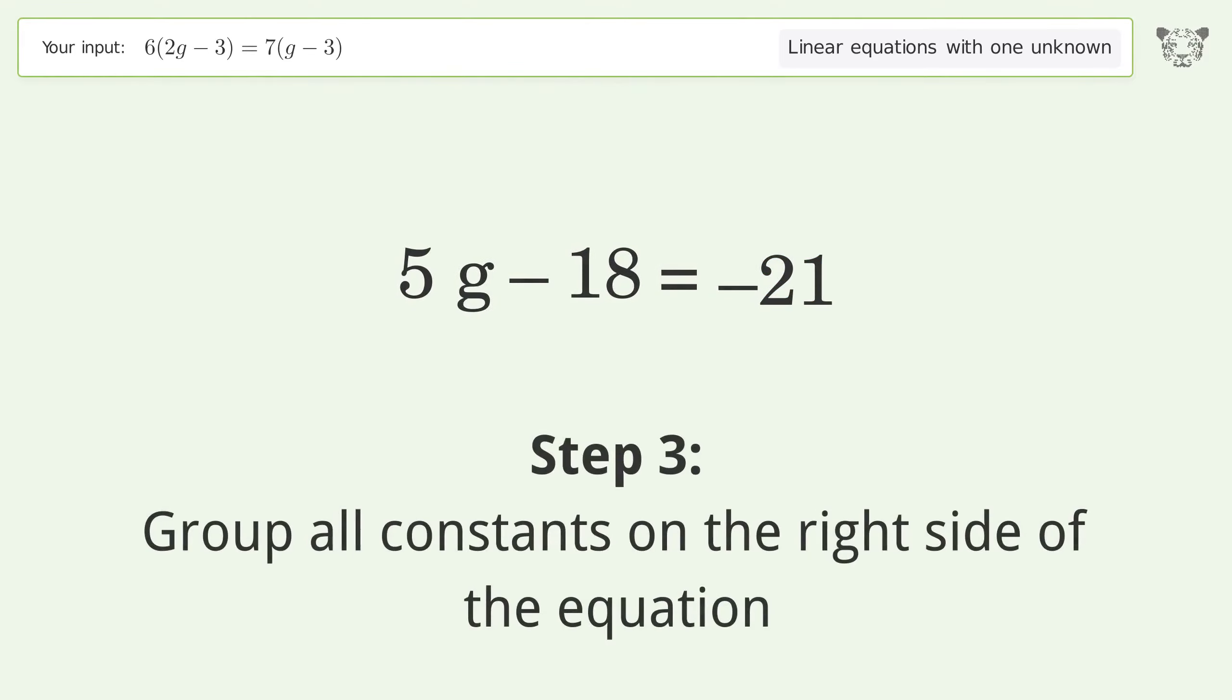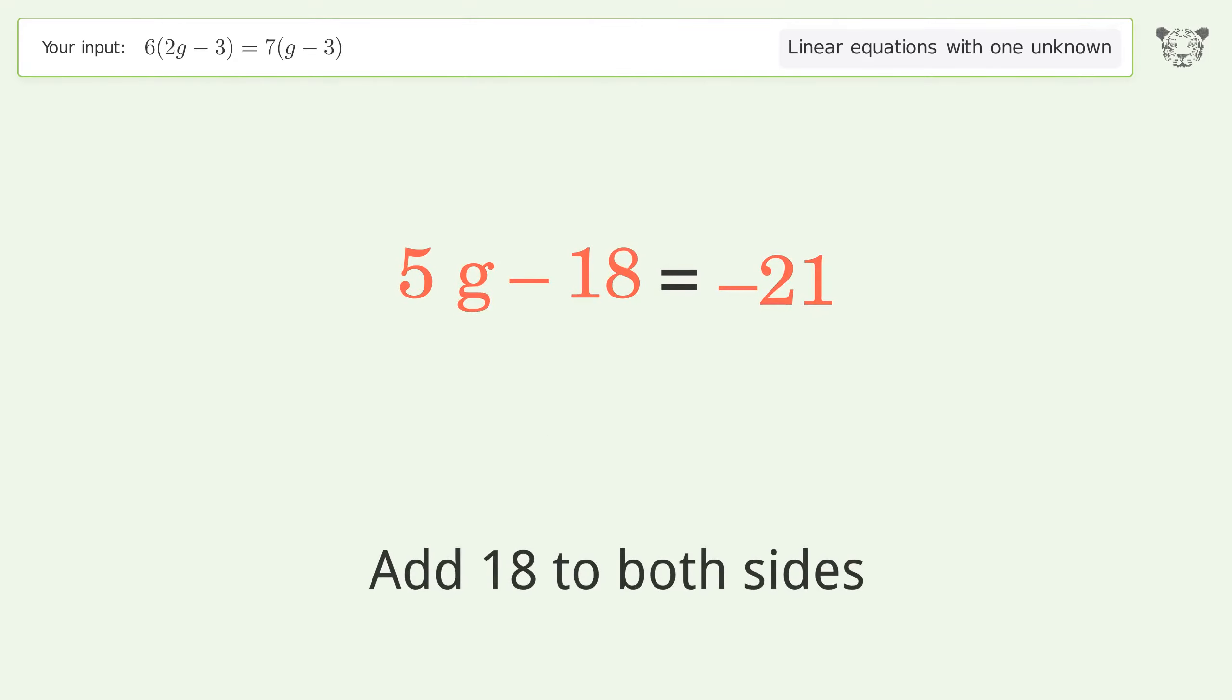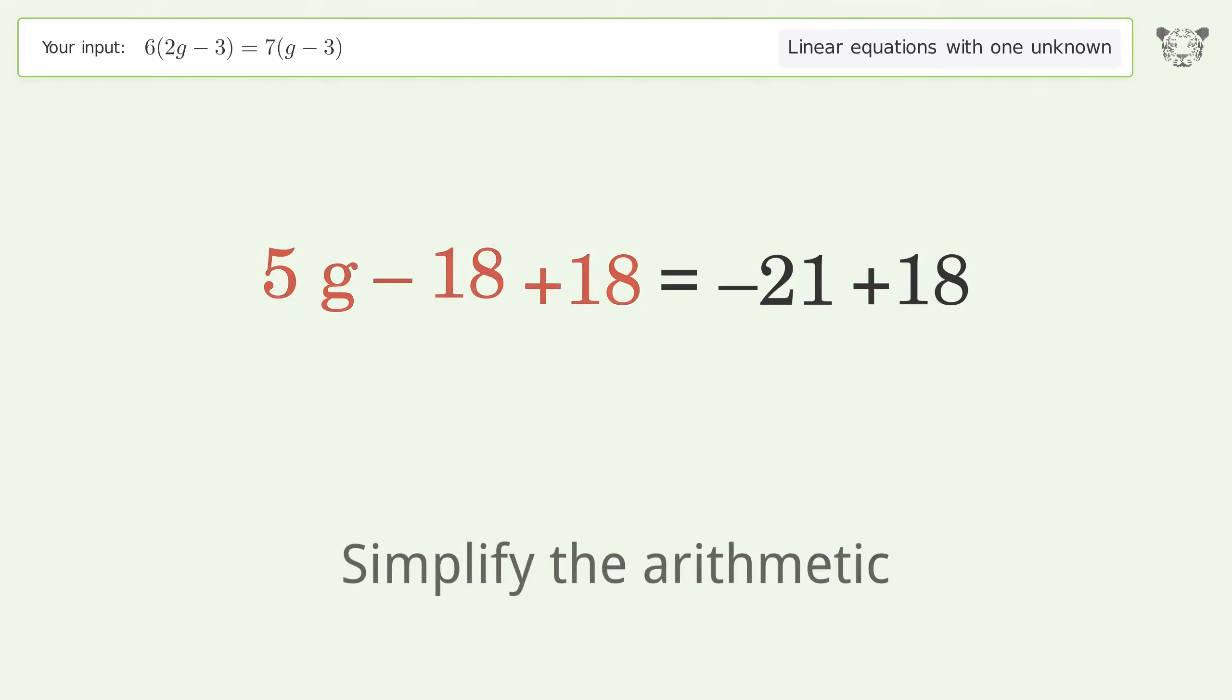Group all constants on the right side of the equation. Add 18 to both sides. Simplify the arithmetic.